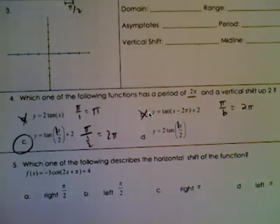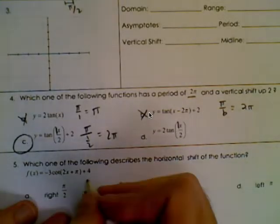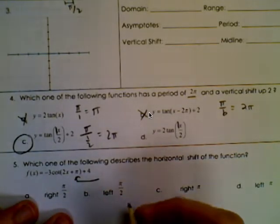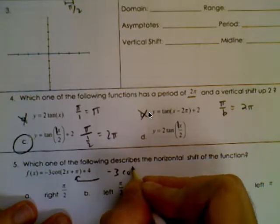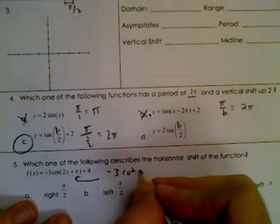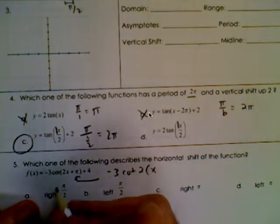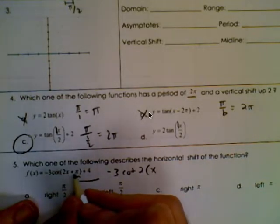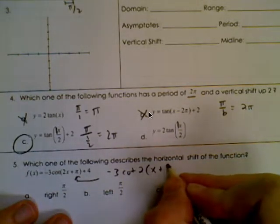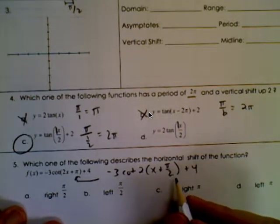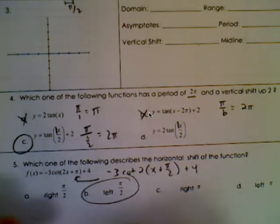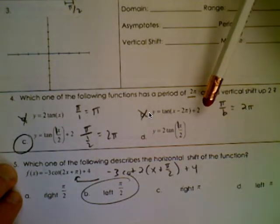For number 5: which of the following describes the horizontal shift of the function? To find the horizontal shift, you need to factor the inside. If I factor this function's inside, I'd have to pull out the 2, which means dividing the pi by 2. So that tells us we have a horizontal shift of pi over 2 to the left.